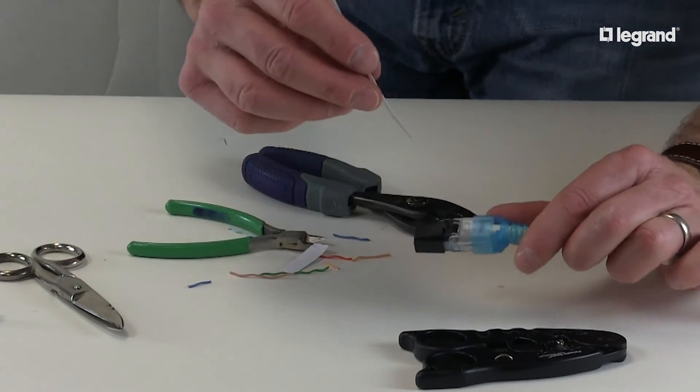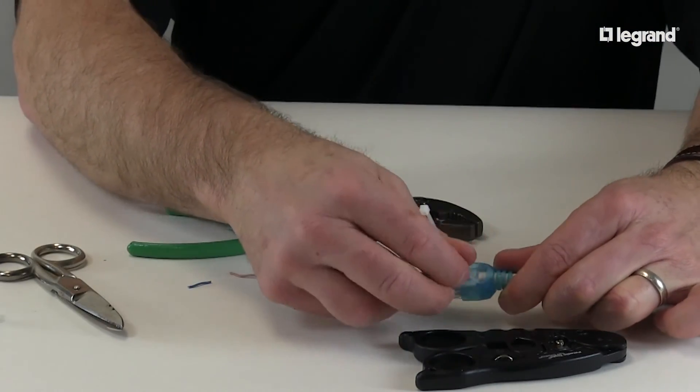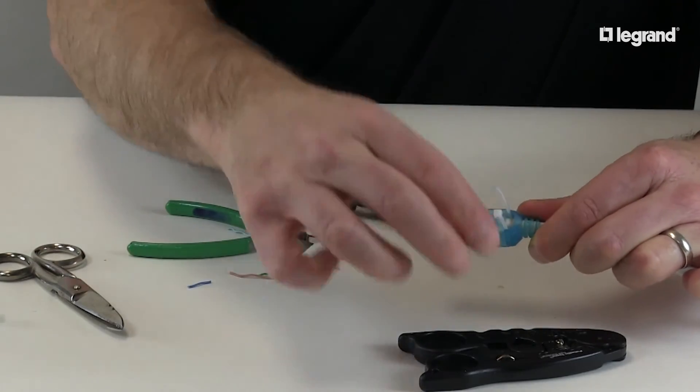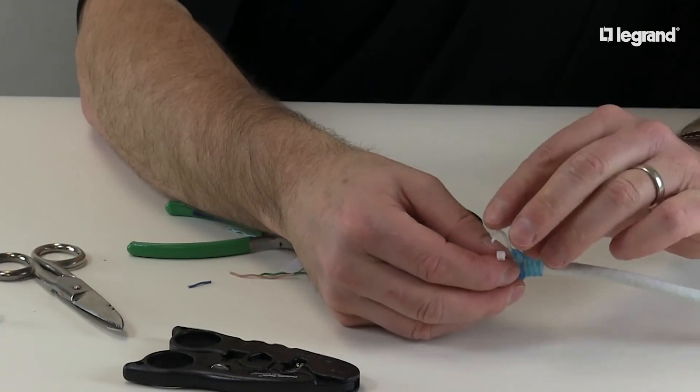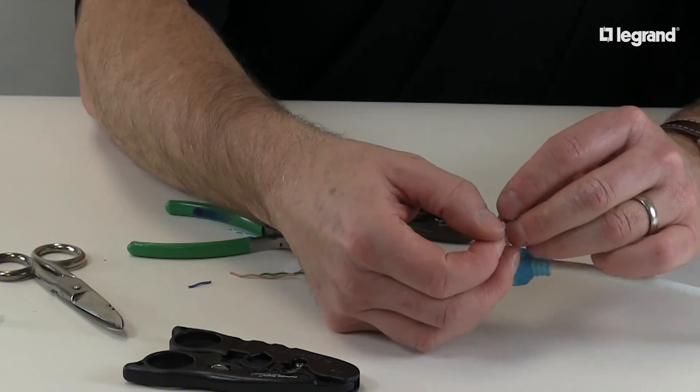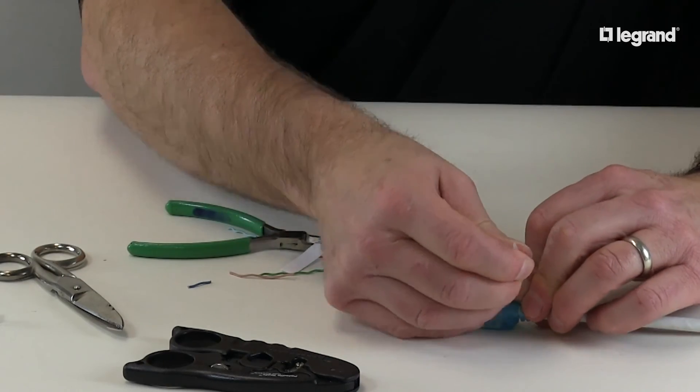Finally, secure the strain relief boot to the plug using the cable tie. Simply insert the cable tie into the slot on the top of the strain relief boot and push until the cable tie wraps around the cable and exits out the other end. Then, tighten the cable tie until it's secure against the cable.